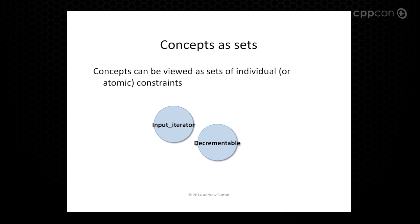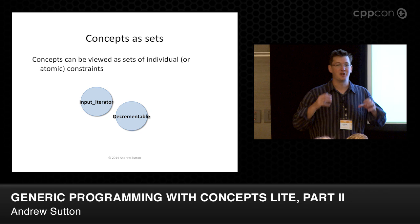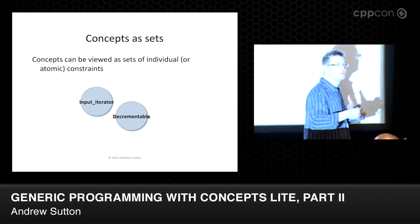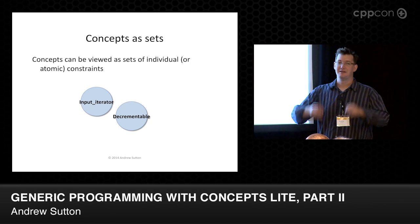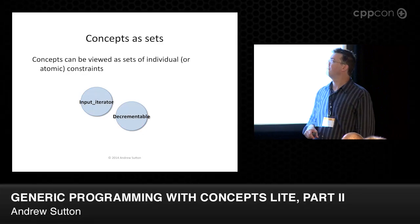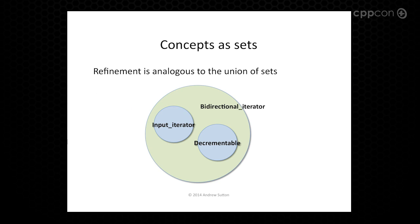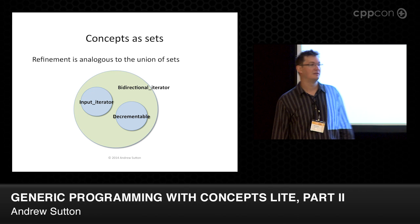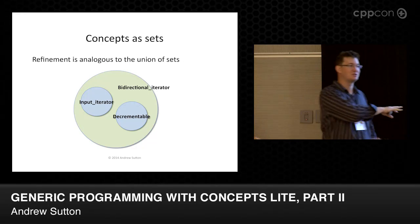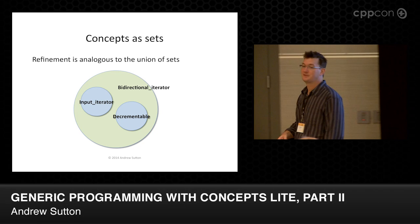If you think about these things in terms of their sets of constraints — meaning if you dig down through all of those concept names and pull out the individual requirements that show up in the requires expressions — those are the atomic constraints: here's a fragment of syntax that has to be valid, here's a type name that has to be valid, here's a conversion that has to be valid. We can think of the bidirectional iterator refinement as the set union of those sets of constraints. The number of cases of refinement existing in the standard library is really not that big: there's the iterator hierarchy, the container hierarchy.